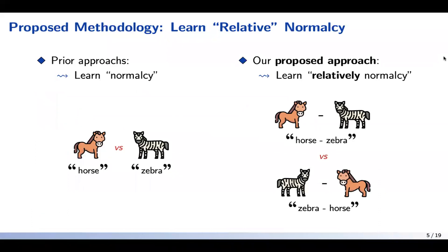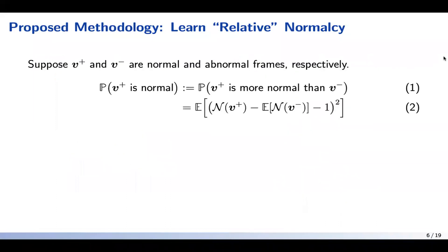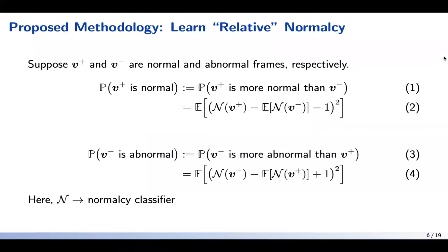Prior works focus on learning normalcy patterns, whereas in our proposed approach, we aim to learn relative normalcy patterns. In simple terms, if V-plus and V-minus are normal and abnormal frames respectively, prior works focus on learning that V-plus is normal, whereas we focus on learning that V-plus is more normal than V-minus. We apply the same concept when V-minus is abnormal.